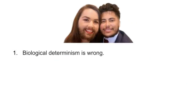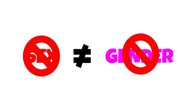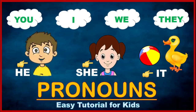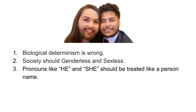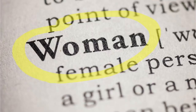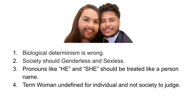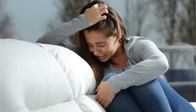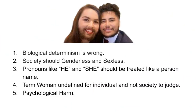In conclusion, LGBTQ plus advocates argue: first, biological determinism is wrong; our society should be both genderless and sexless. Pronouns like he or she should be treated like names — when you meet someone, you ask them what their name is, and this should also be done for gender pronouns. Terms like women and men should not be defined at all; each individual should determine what that term means for them. Biological realities should have no bearing on what a woman or man is — it is up to the individual to judge. And the reason to adopt this thinking is that the psychological harm of telling someone they are not a real man or woman has lasting effects, like when blacks and Jews were told they were not human.